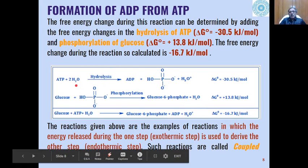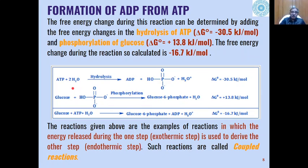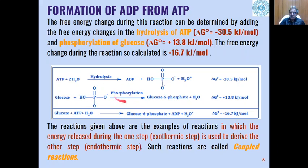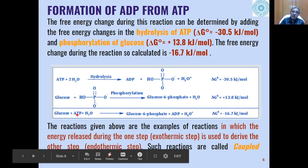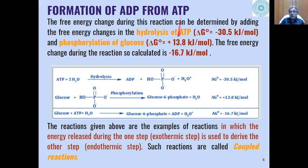In the first step, ATP undergoes hydrolysis to give ADP and one molecule of hydrogen phosphate. This is an exothermic reaction releasing minus 30.5 kilojoules per mole. Then glucose reacts with hydrogen phosphate and undergoes phosphorylation to give glucose 6-phosphate, an endothermic process requiring plus 13.8 kilojoules per mole. Overall the reaction is exothermic, and this is how ADP is formed from ATP through this process.